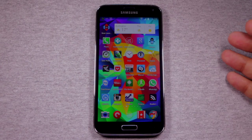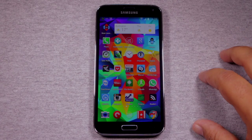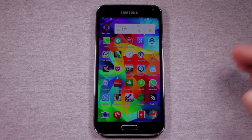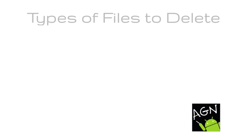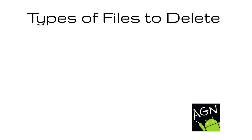It's way easier if you have an app that shows you in one place all the files you can delete. Here are the types of files we're going to delete. Number one, junk files. These are temporary files, cache files, and files that apps use to hold data. These are all files we can quickly delete to recover some much needed space.